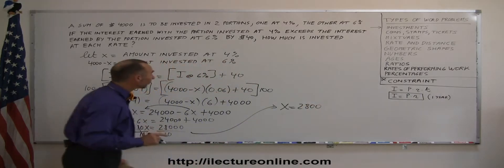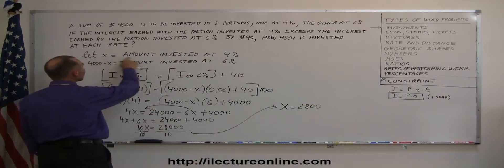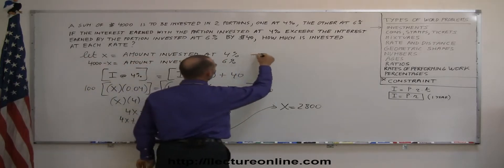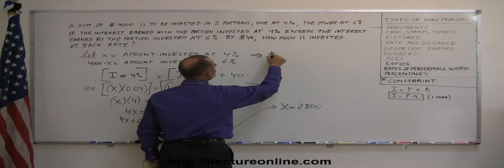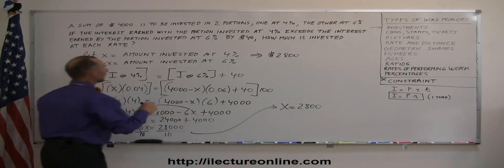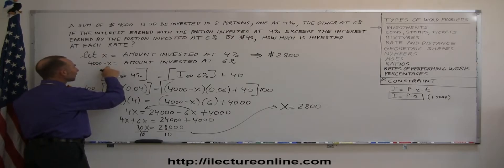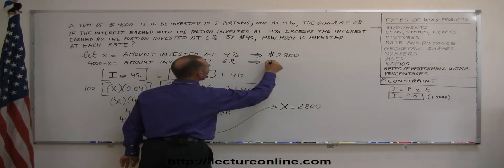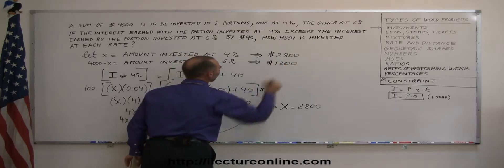And since we did such a good job defining what x was, x was the amount invested at 4%, so the amount invested at 4% is $2,800. And that leaves 4,000 minus 2,800, which is 1,200, that leaves $1,200, which was invested at 6%.